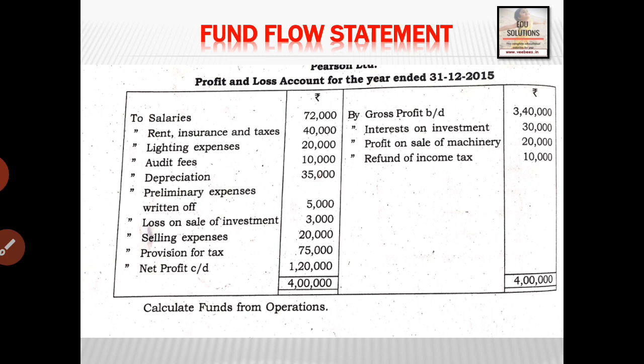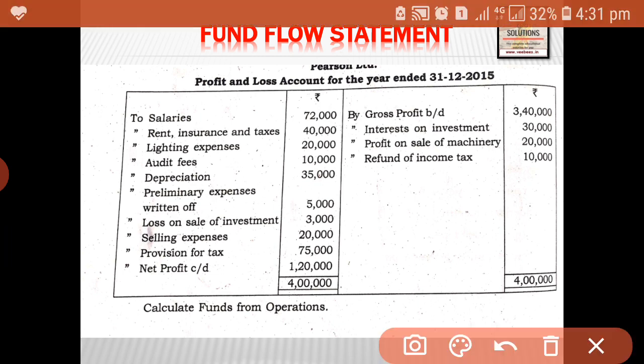If there are such non-fund, non-operating items, it is better to start with the indirect method. So we will start with net profit of 1,20,000. Then we will add non-fund, non-operating expenses debited. What are those? Salary, rent, lighting, audit fee, depreciation — depreciation is a non-fund, non-operating item. Preliminary expenses written off is a non-fund, non-operating item. Loss on sale is a non-fund, non-operating item. Selling expenses is an operating item. Provision for tax is a non-fund, non-operating item.